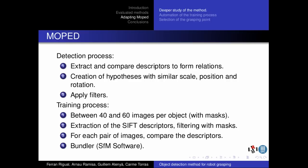In the training process, between 40 and 60 images have to be taken per object, each one with the corresponding image mask. For each image, SIFT descriptors are extracted and filtered using the masks. After this, the remaining descriptors in all of the possible pairs of images are compared and related. Finally, Bundler — the Structure from Motion software — uses this information to generate the 3D object model.